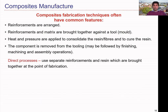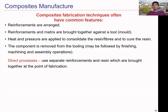We can classify composite manufacturing into two main types: direct and indirect processes. In direct processes, separate reinforcements and resin are brought together at the point of fabrication — there is no pre-preparation of materials. We just use the reinforcements and matrix material at the time of production. For example, spray-up or manual layup are direct processes with no pre-preparation of materials.